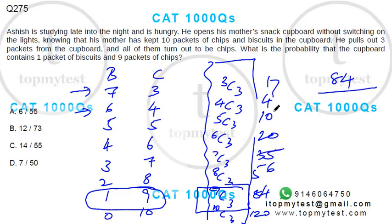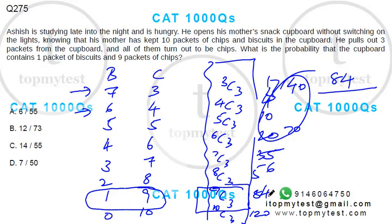All possible cases will be the sum of all these values. 1 plus 4 is 5, plus 35 is 40, plus 10 is 50, plus 20 is 70, plus 56 and 84 gives 140, plus 70 is 210, plus 120 is 330. This will be our total.